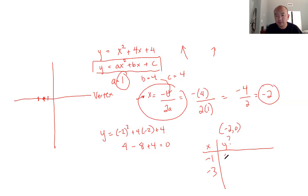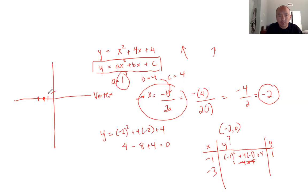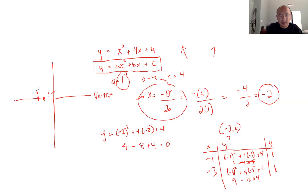So if I choose negative 1 and negative 3 for the x values, what are the y values going to be? I'll plug them in. Negative 1 squared plus 4 times negative 1 plus 4 — that's 1 minus 4 plus 4, which cancel out, so the y value is 1. Then for x equals negative 3: negative 3 squared plus 4 times negative 3 plus 4 — that's 9 minus 12 plus 4, which is also positive 1. So the parabola keeps going this way and that way.